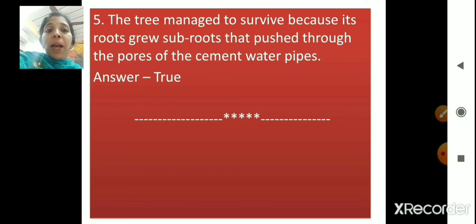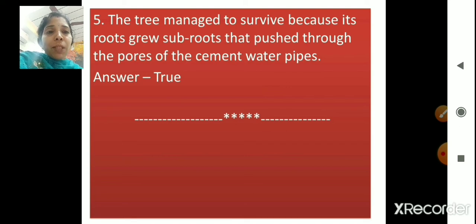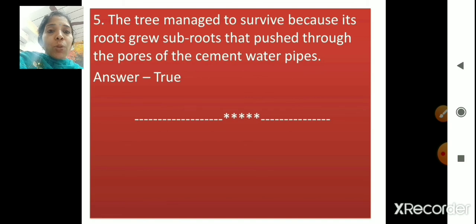'The tree managed to survive because its roots grew sub-roots that pushed through the pores of the cement water pipes.' The tree has its sub-roots — those thin hair-like roots. They thrust themselves into the miniscule pores of the cement water pipes. So, this statement is also true.